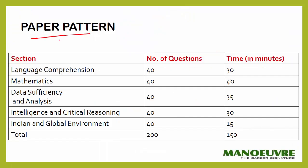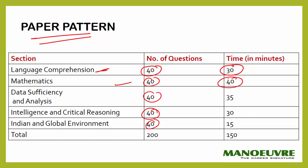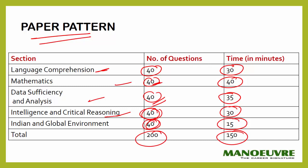Now let's quickly see the paper pattern of the MAT. We have 5 sections and each section has 40 questions. For English you have 30 minutes, Mathematics has 40 minutes, Data Sufficiency and Analysis has 35 minutes, Intelligence and Critical Reasoning has 30 minutes, and India and the Global Environment has 50 minutes for 40 questions. Overall, 150 minutes are given to you to solve 200 questions.